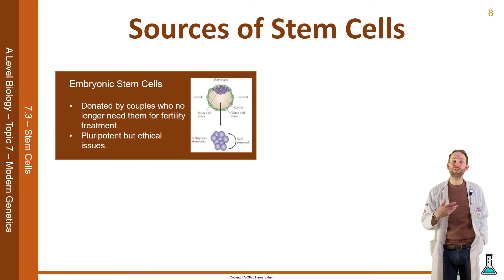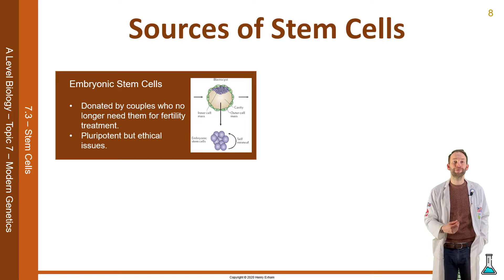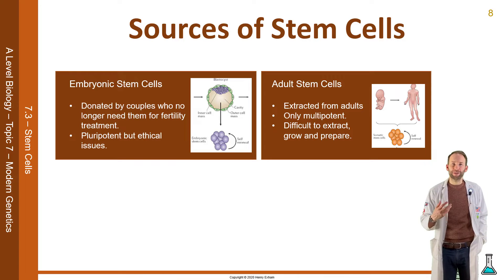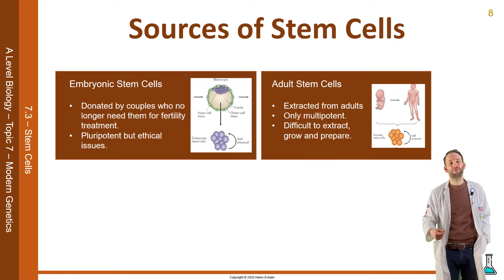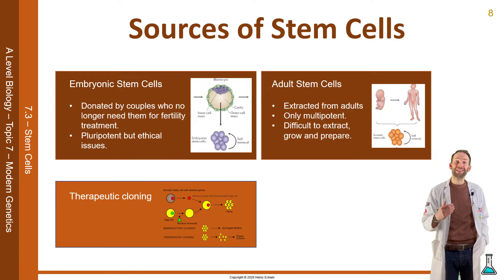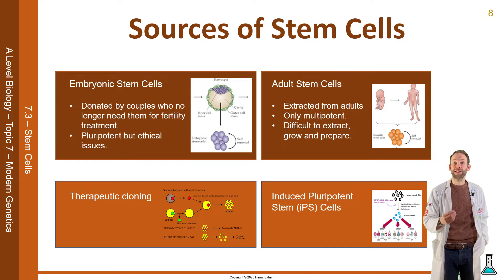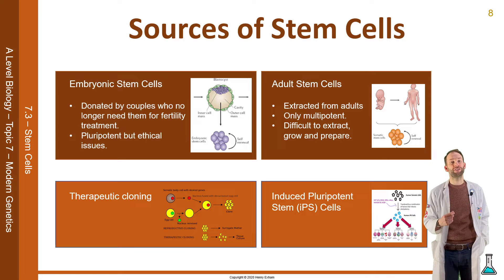Scientists want a good source of stem cells. They can get embryonic stem cells from embryos donated by couples who no longer need them for fertility treatment, but there are ethical issues surrounding that. Or they can get adult stem cells, but these are only multipotent and quite difficult to extract, grow, and prepare. More modern techniques include therapeutic cloning and induced pluripotent stem cells.